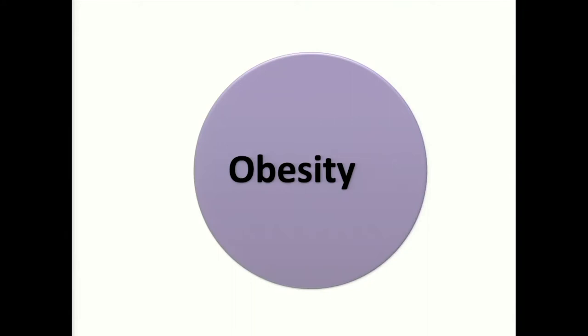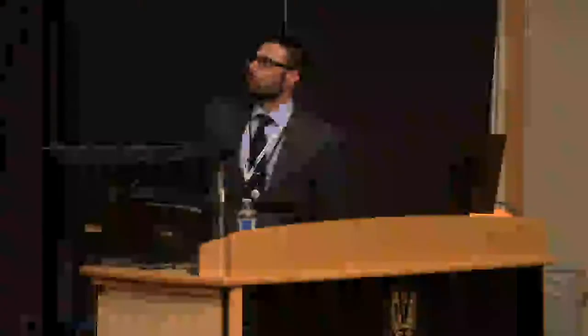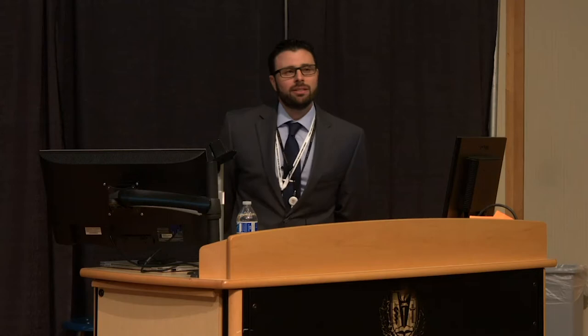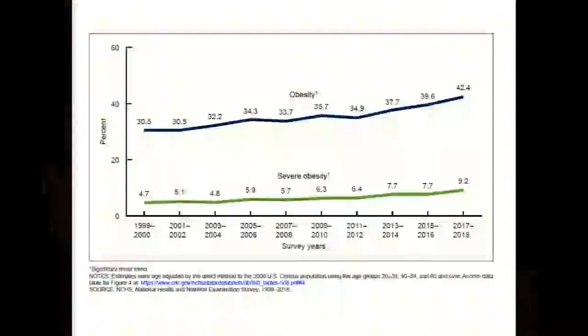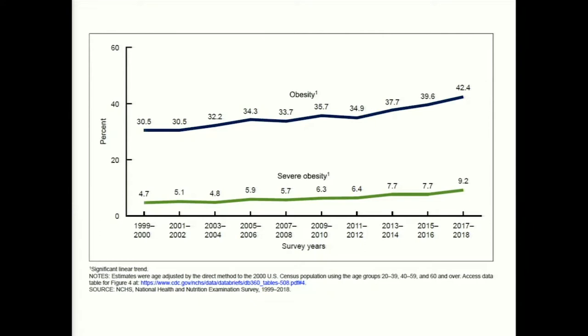Let's start with obesity as our first circle, because obesity really triggers the majority of what we'll discuss today. When I say diabetes today, I'm referring to type 2. As we can see, obesity throughout our country is continuing to rise — from 1999 to the present, both obesity and severe obesity are significantly increasing.